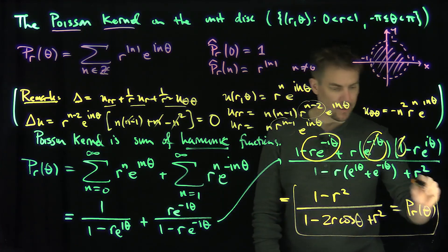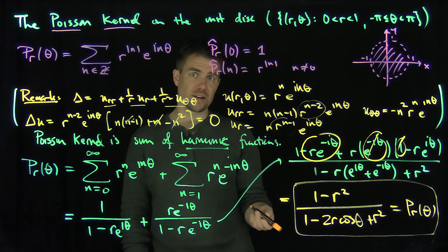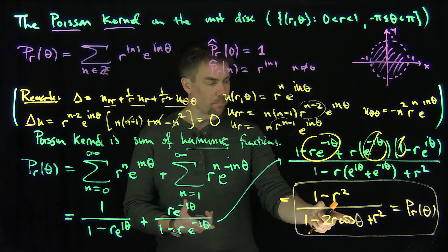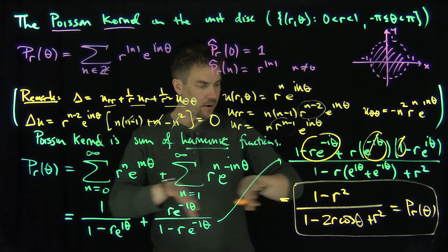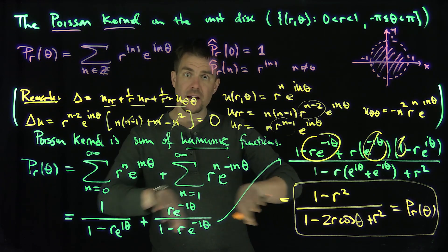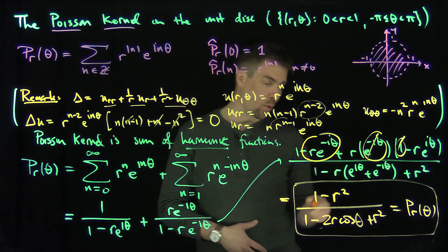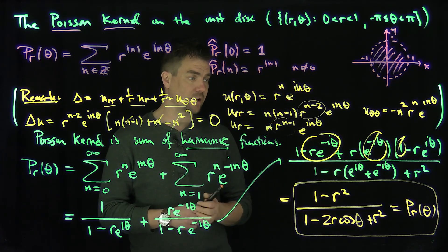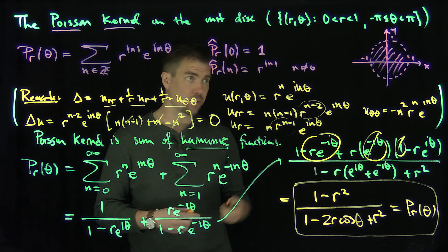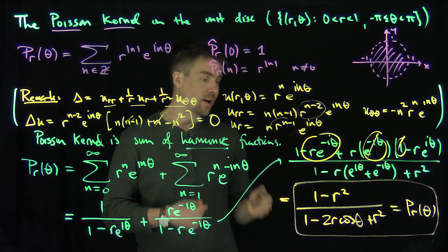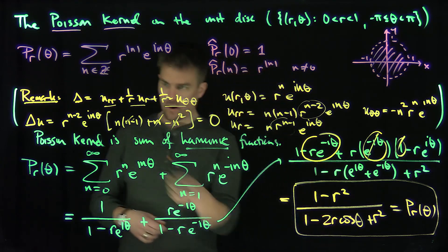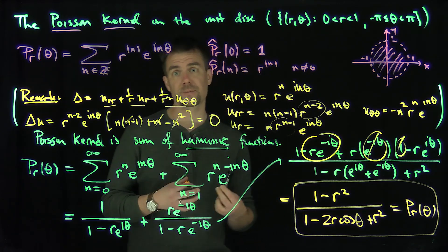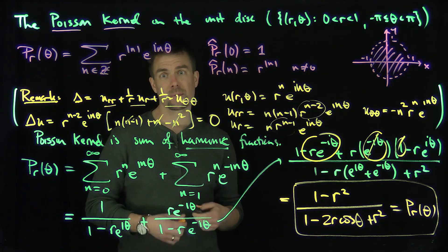This is a beautiful formula. In further videos we'll see this is an approximation to identity — these terms are clearly non-negative, and as r goes to 1 this converges to a delta function. So this will form an approximation to identity, which we'll use to solve the Laplace equation on the interior of this region with given boundary conditions. The Poisson kernel is also a harmonic function, and it will play the role of an approximation to identity in further boundary value problems. Thank you very much.